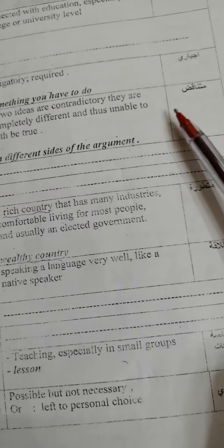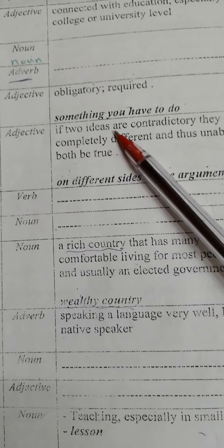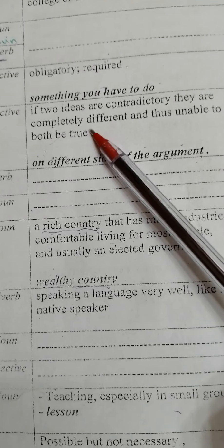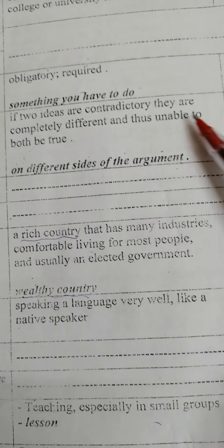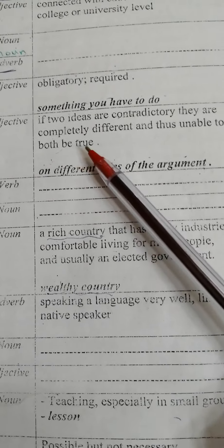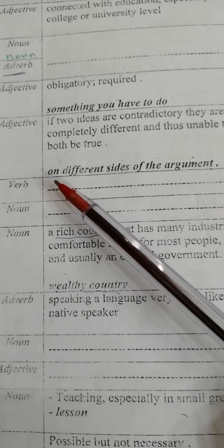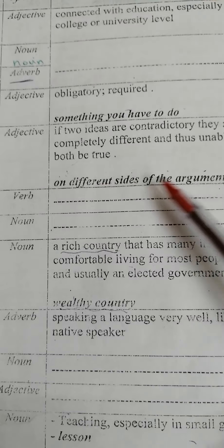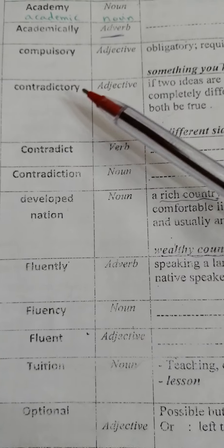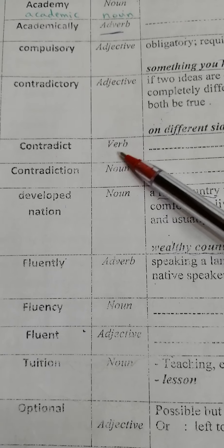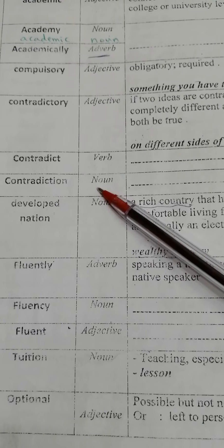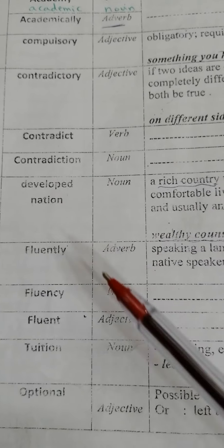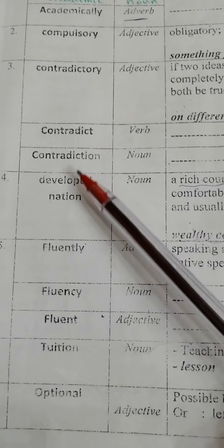'Contradictory' means متناقض — it's an adjective. If two ideas are contradictory, they are completely different, and those ideas are unable to both be true. Another meaning: they are on different sides of the argument. The derivations are: 'contradictory' (adjective), 'contradict' (verb), and 'contradiction' (noun) — three derivational words.